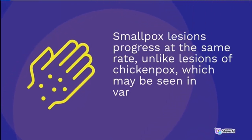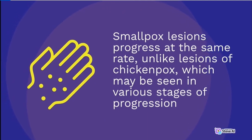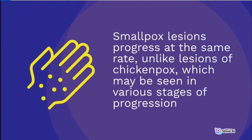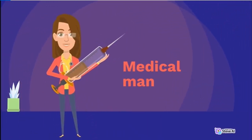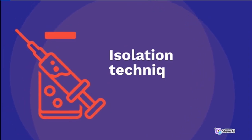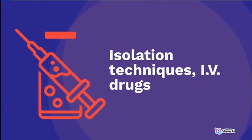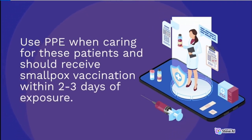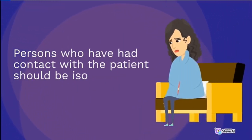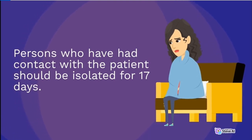Smallpox lesions progress at the same rate, unlike lesions of chickenpox, which may be seen in various stages of progression. Medical management includes isolation techniques. Those caring for these patients should receive smallpox vaccination within 2 to 3 days of exposure. Persons who have had contact with the patient should be isolated for 17 days.